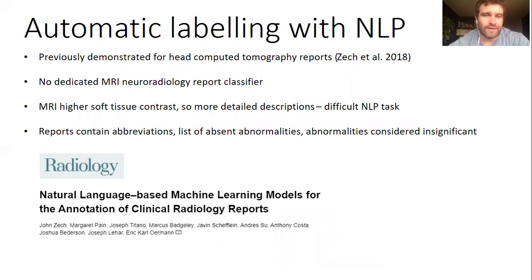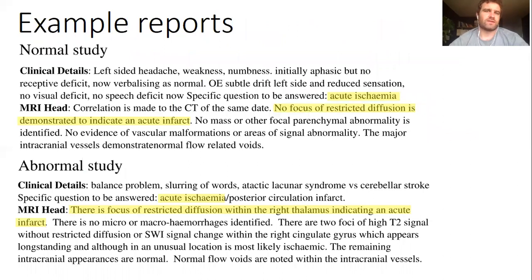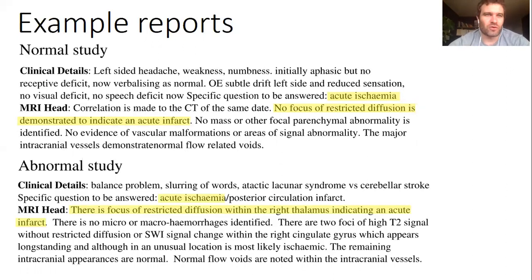This isn't a particularly new idea. NLP has been used in this way to label head CT datasets from radiology reports before, using fairly basic NLP techniques like bag of words and n-gram models, but until now there's been no demonstration of this for MRI data. We put this down to the greater complexity of MRI reports, which follows from the superior soft tissue contrast of MRI compared to CT, allowing more detailed description of abnormalities. To give some idea of this, here are a couple of examples of radiology reports from our dataset.